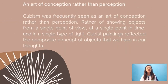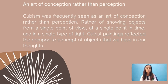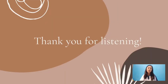In contrast to displaying objects as our vision has warped them, monochromatic color removes the effects of lighting to represent objects as we know them to be in their actual form. Because of this, Cubism was frequently viewed as a conceptual art form as opposed to a perceptual one. Instead of portraying objects from a single point of view, at a single point of time, and in a single type of light, Cubist paintings reflected the composite concept of objects that we have in our minds. We hope you learned something from our report on Cubism. Thank you for listening.